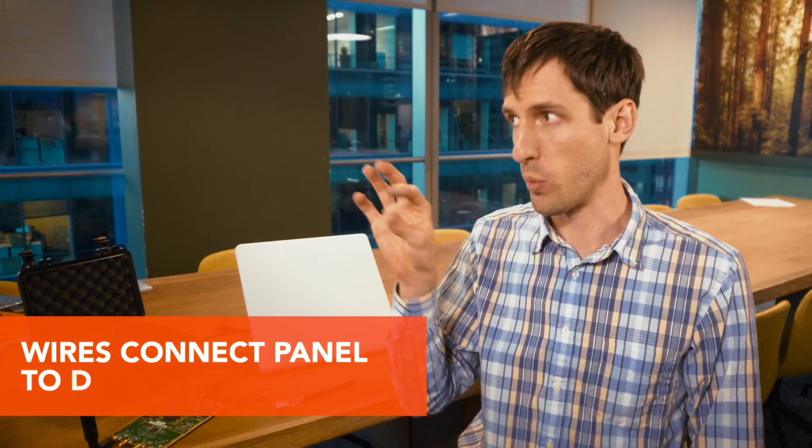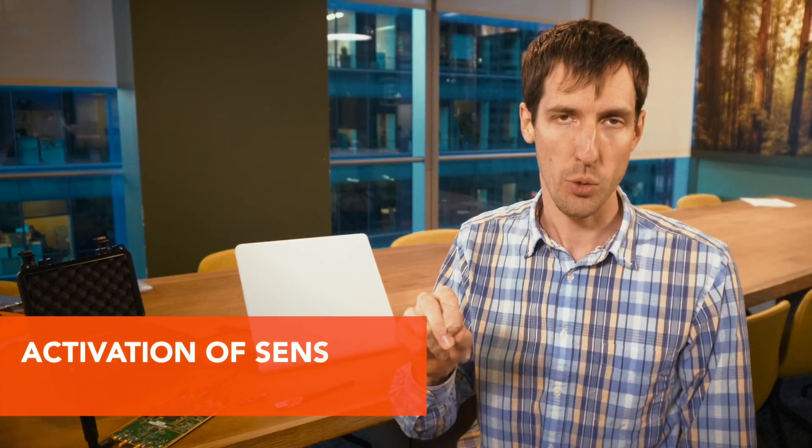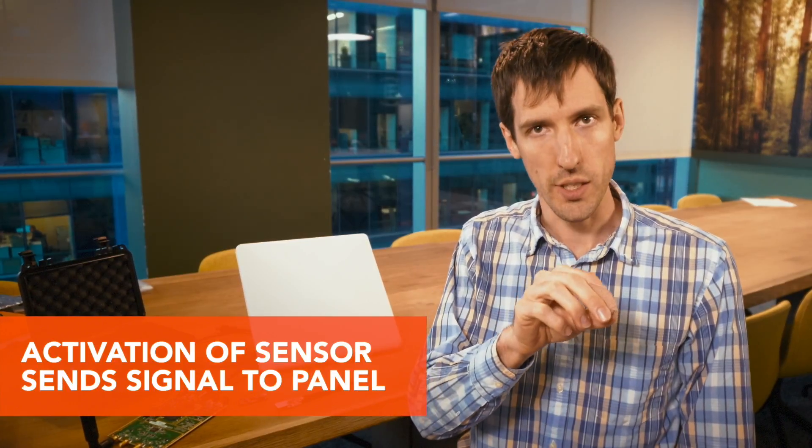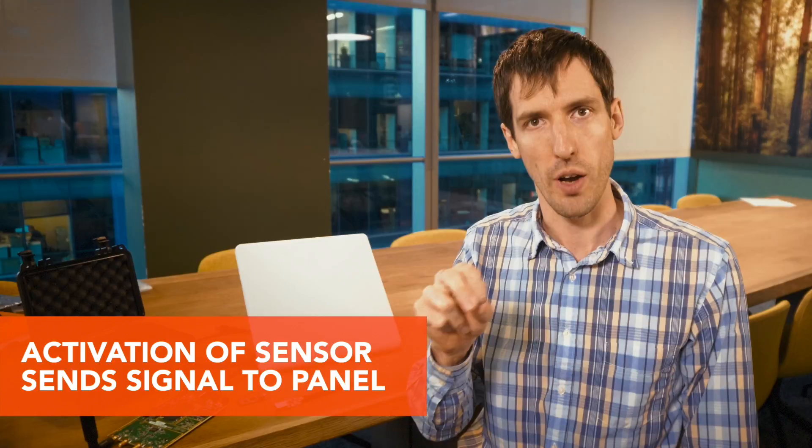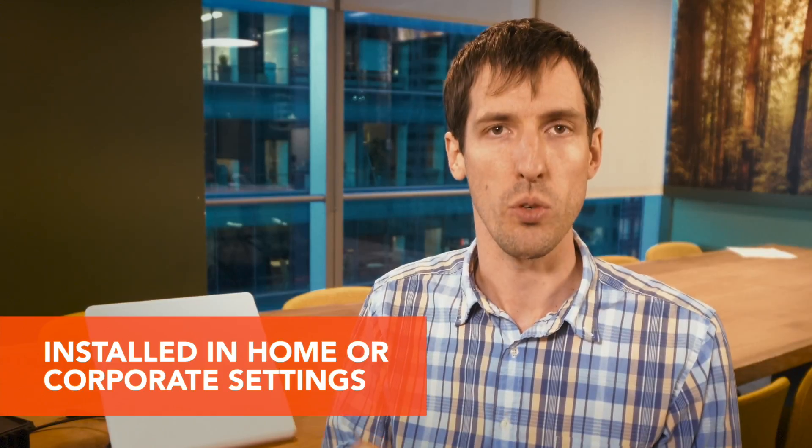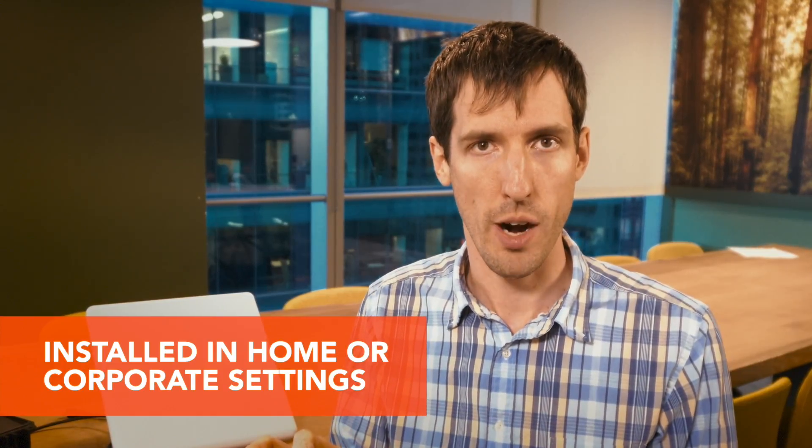Traditionally, alarm systems have been wired so that you have one master control system, the control panel, and then you have wires going to all of the different sensors such as windows and doors. If any of those sensors are actuated or activated, that signal is sent via copper wire back to the main unit. This can be installed within people's homes and also within the corporate environment to detect unauthorized access to various facilities and rooms.